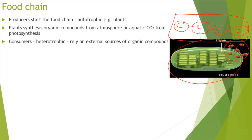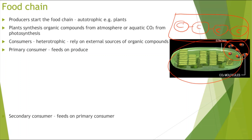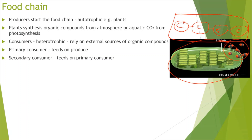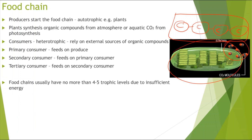Consumers are heterotrophic. Where producers are autotrophic, consumers rely on external sources of organic compounds — they cannot photosynthesize, so they feed on other things. We have the primary consumer which feeds on the producer, the secondary consumer which feeds on the primary, and the tertiary consumer which feeds on the secondary. Food chains usually have no more than four to five trophic levels.